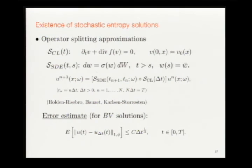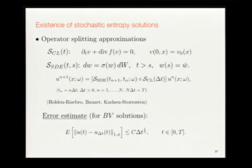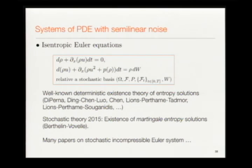The error estimate is nontrivial because you are discretizing in time for equations where neither stochastic calculus nor finite difference operators admit the usual chain rule. Getting a rate of convergence is significantly more difficult than in the deterministic hyperbolic case due to the rough nature of the noise in time, but for this particular splitting approximation you can extract an exponent of 1/3.